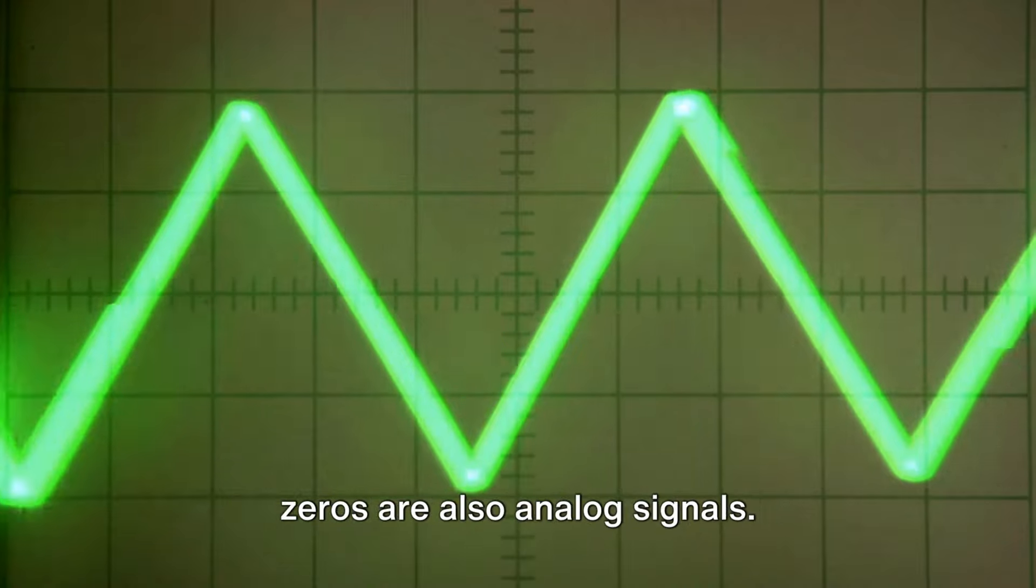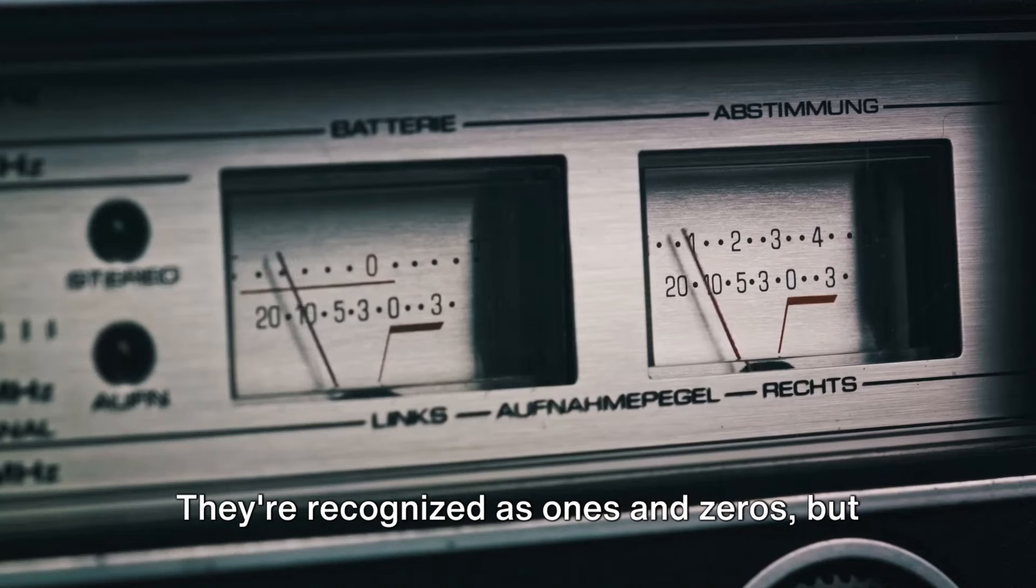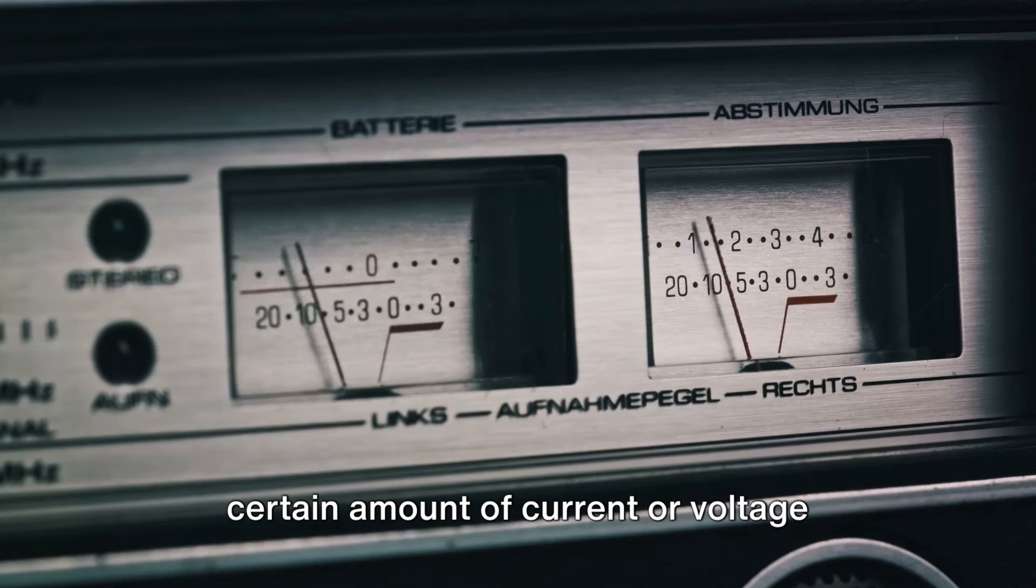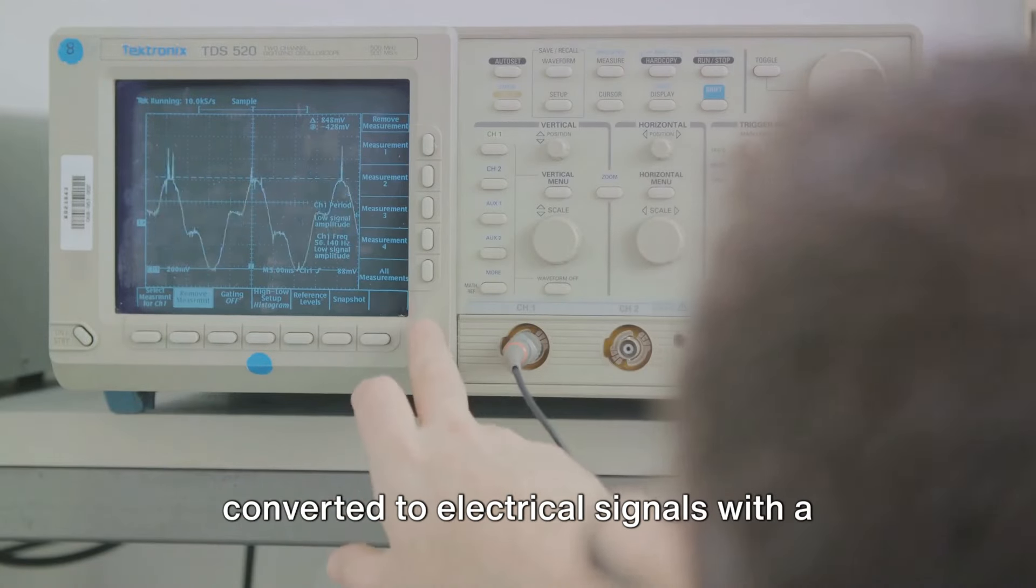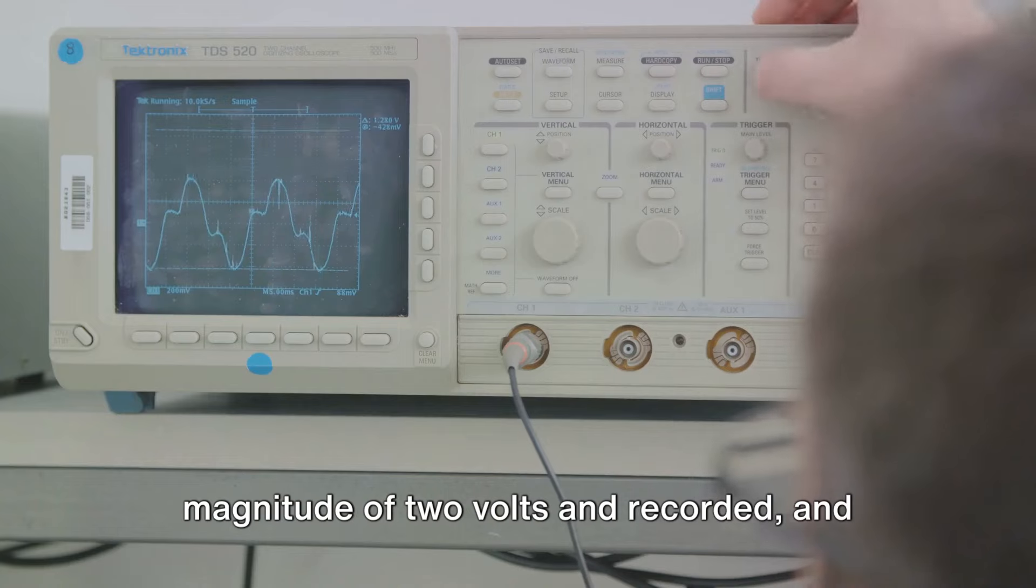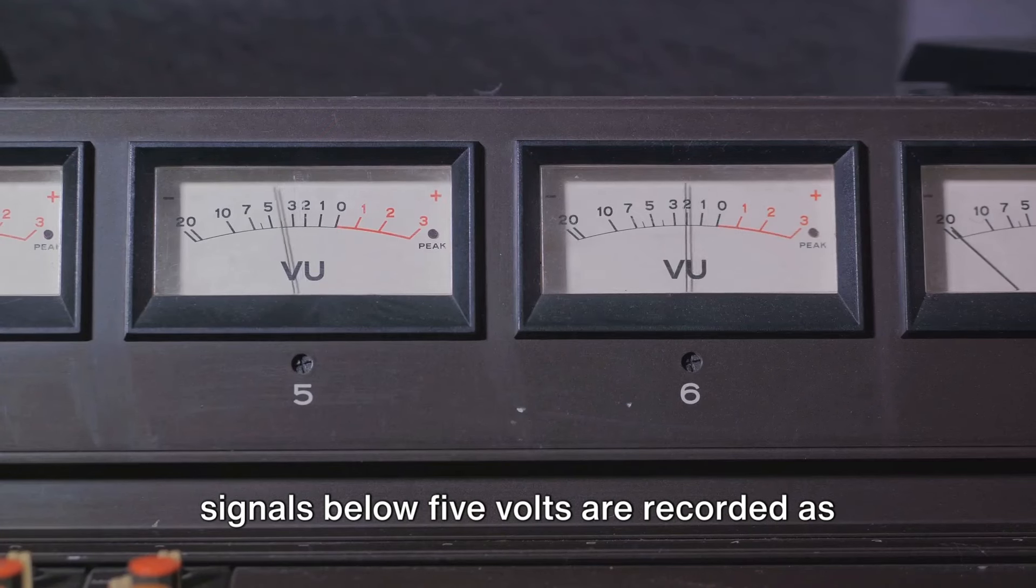But here's the twist. These 1s and 0s are also analog signals. They're recognized as 1s and 0s, but they're ultimately analog signals with a certain amount of current or voltage determined by the system. All signals above 5 volts are converted to electrical signals with a magnitude of 2 volts and recorded, and signals below 5 volts are recorded as 0 volts. In reality, there aren't just 1s and 0s. What exists are analog signals of a size that is intended to be interpreted as 1, and analog signals of a size meant to be recognized as 0. What we end up hearing is another analog signal that's been restored to resemble the original analog signal as closely as possible.